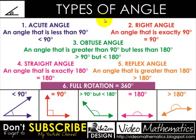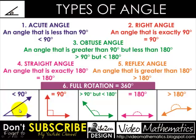After learning the process of measuring an angle, here we will know about types of angles. The first type is an acute angle — an angle that is less than 90 degrees. Look here, this is an angle less than 90 degrees; this is an acute angle. Then comes the right angle — an angle that is exactly 90 degrees.